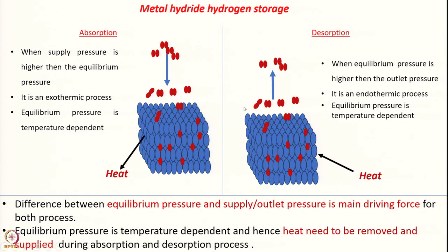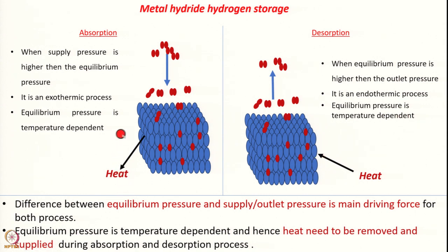During the desorption process, when we require the absorbed hydrogen, we supply heat to it, and the hydrogen absorbed inside comes out from the metal hydride reactor. For desorption, the equilibrium pressure of metal hydride needs to be higher than the outlet pressure. The main driving force for desorption is the difference between equilibrium pressure and outlet pressure; for absorption, it is the difference between supply pressure and equilibrium pressure.